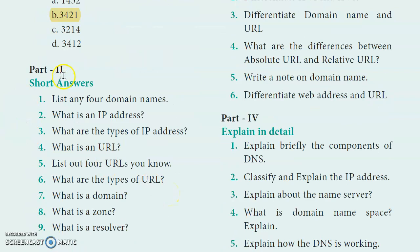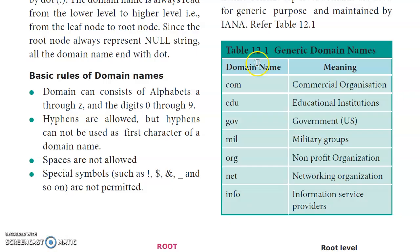Part 2, first question: List any four domain names. From the generic domain names table, examples include: .com, .edu, .gov, .mil, .org, .net, .info.